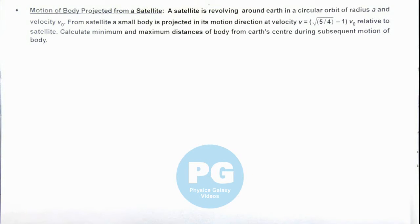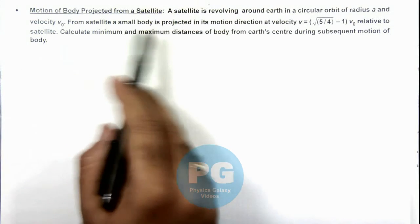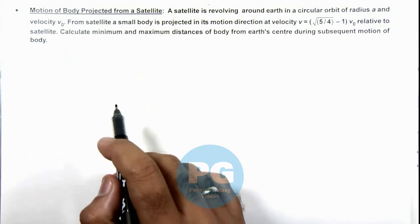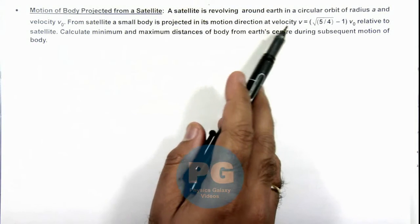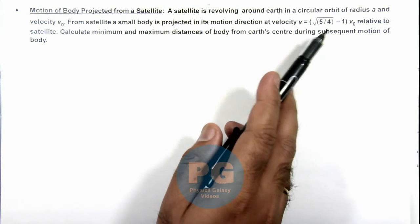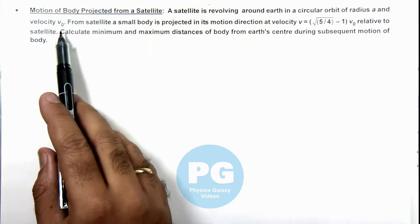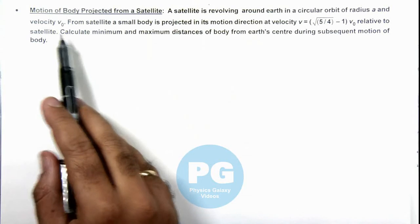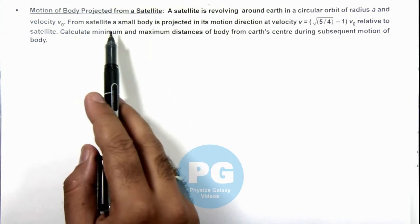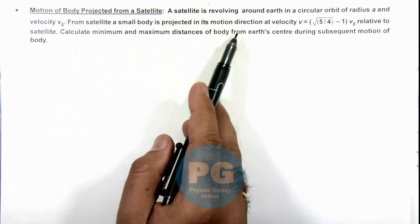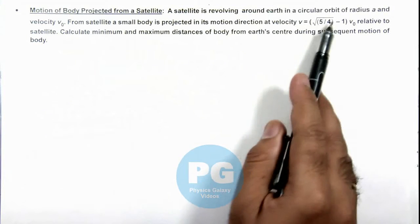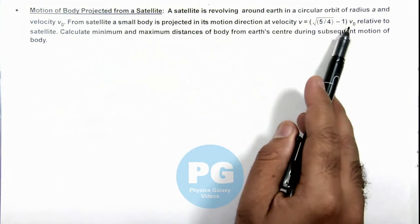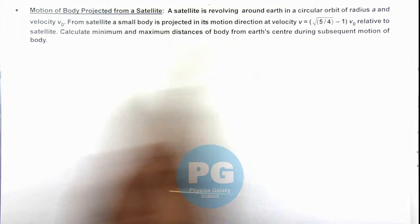In this illustration we'll analyze the motion of a body projected from a satellite. A satellite is revolving around Earth in a circular orbit of radius a and velocity v₀. From the satellite, a small body is projected in its direction of motion at a velocity given as (√(5/4) − 1) times v₀ relative to the satellite.